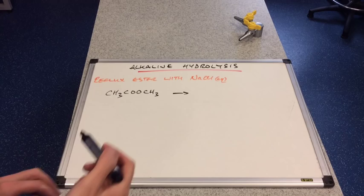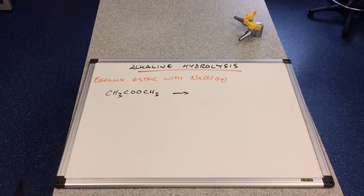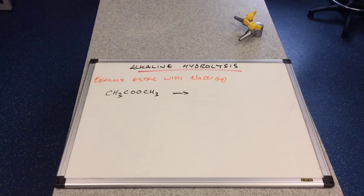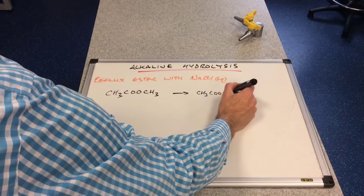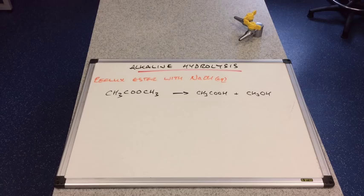So the first thing we're going to look at is, what's going to happen to this ester? It's going to be hydrolyzed. It's going to be broken up by the water, the aqueous part of the sodium hydroxide. So remember, we're going to break this bond here. So if you think about it, what will we get? We'll get CH3, COOH, and CH3OH. So the water's going to do that.